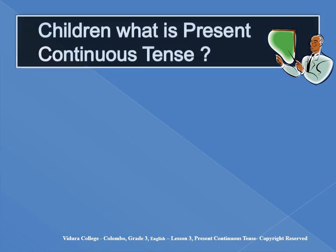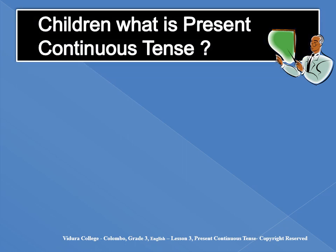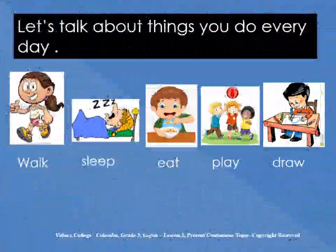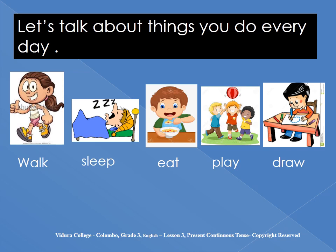Children, what is Present Continuous Tense? The Present Continuous Tense indicates that an action or condition is happening now, frequently, and may continue into the future. Let's talk about things you do every day: walk, sleep, eat, play, draw.